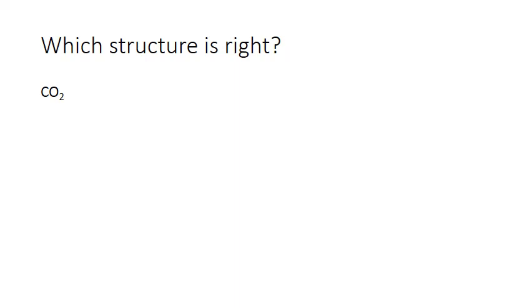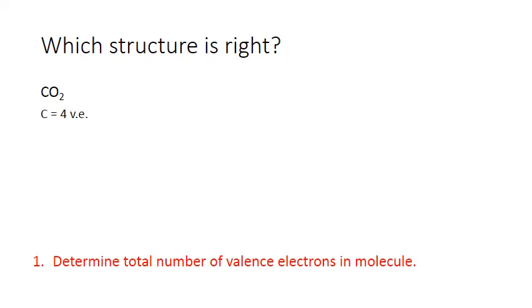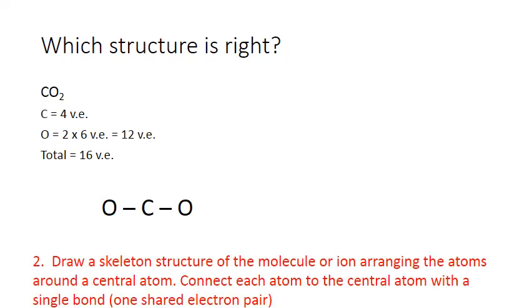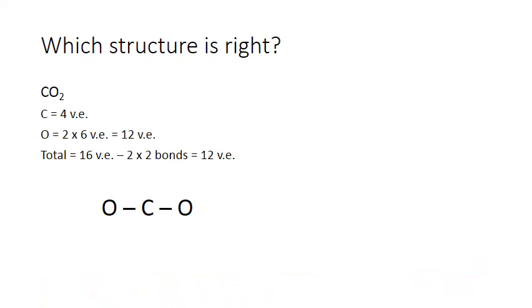Let's look at an example of a molecule where we might come up with more than one possible Lewis structure. We'll look at carbon dioxide, and we'll start by determining the number of valence electrons. Carbon is from column 14, so that's four valence electrons. Oxygen is column 16, so six valence electrons times our two oxygen atoms. We end up with four plus 12, giving us a total of 16 valence electrons. Next, we'll place carbon in the middle for the skeletal structure, because it's less electronegative than oxygen, and we only have one of them. We'll connect each oxygen to the central carbon with a single bond.